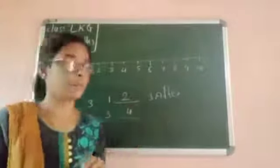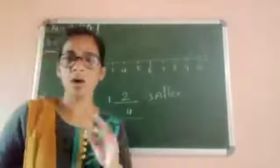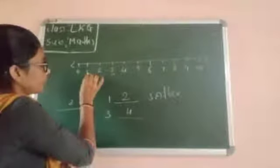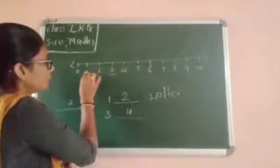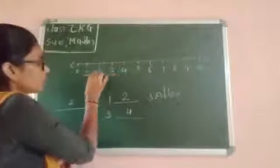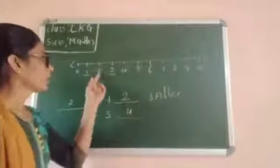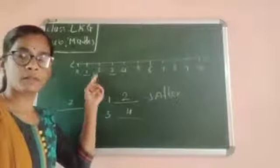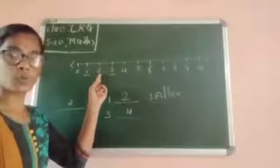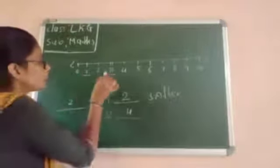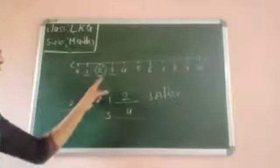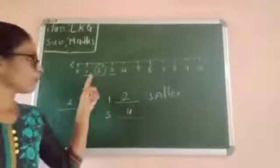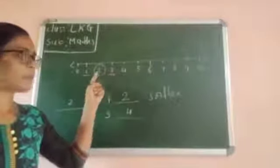Then how to write between number. Between number — you know 1 and 3. We are given 2 numbers. What is the number in between 1 and 3? That is 2. This is called a between number. One and 3, between is 2.